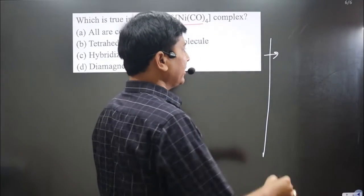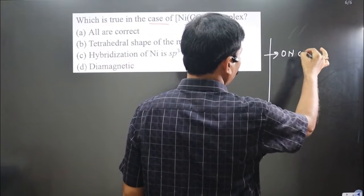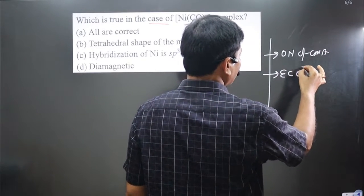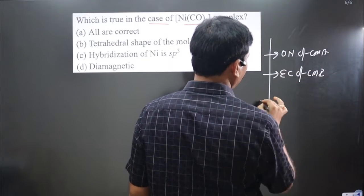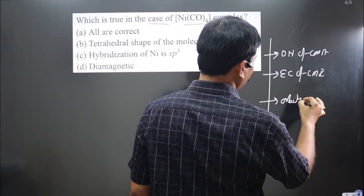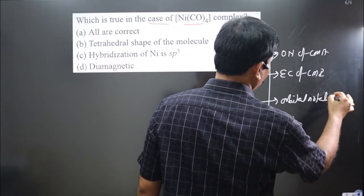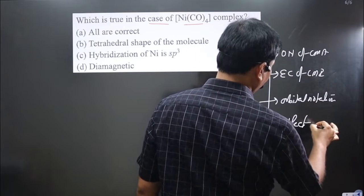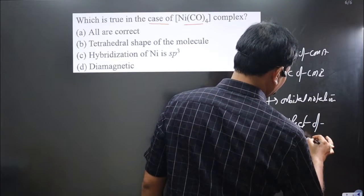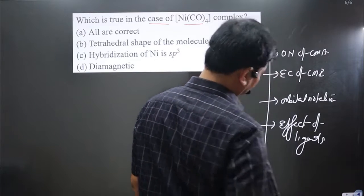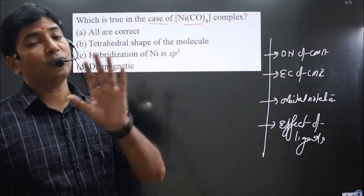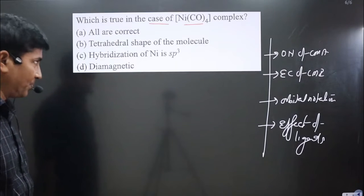The steps we follow in Valence Bond Theory: First, write down the oxidation number of the central metal atom. Next, write electronic configuration of central metal ion. Then write orbital notation of the central metal. Finally, consider the effect of ligand before filling electrons in the orbital notation. If strong field ligand, pairing of electrons occurs; if weak field ligand, no pairing occurs.